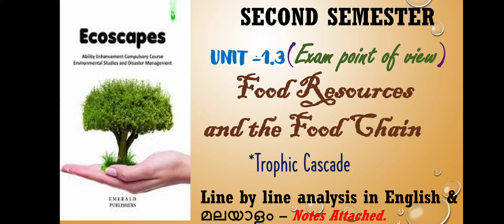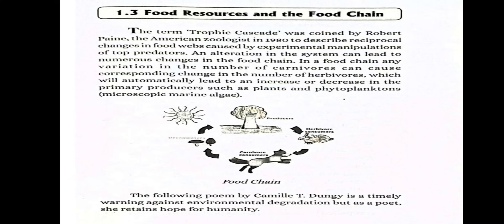Prior to the beginning of the poem, let me look at the introductory section. What is Trophic Cascade? The term Trophic Cascade was coined by Robert Payne, the American zoologist, in 1980, to describe reciprocal changes in food webs caused by experimental manipulations of top predators. An alteration in the system can lead to numerous changes in the food chain.